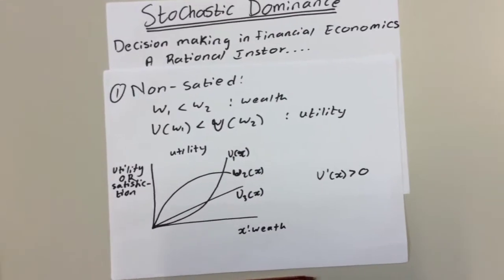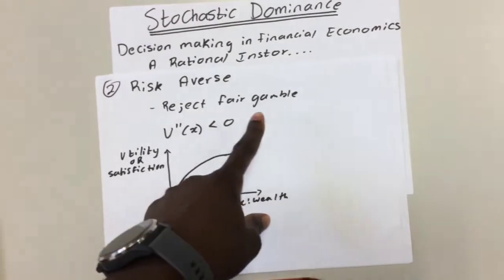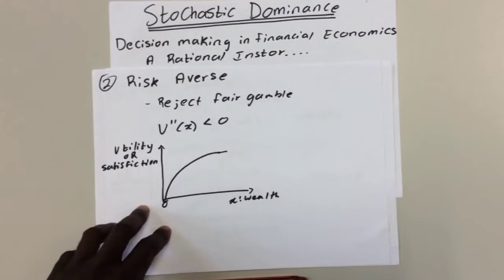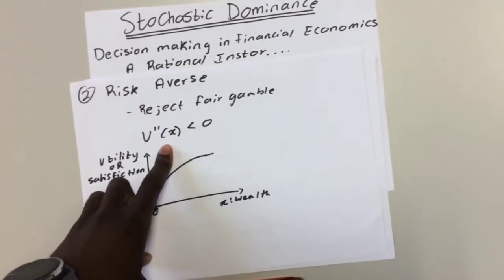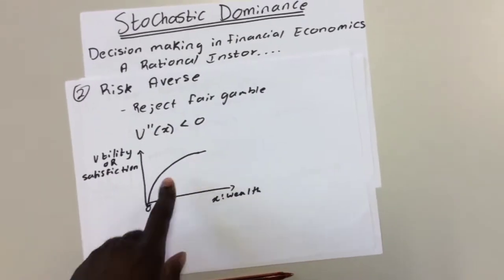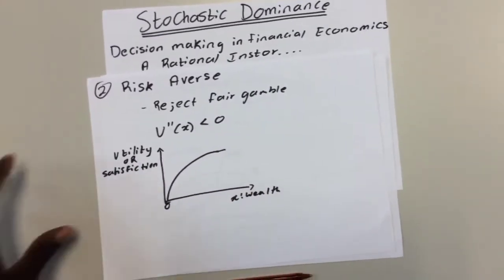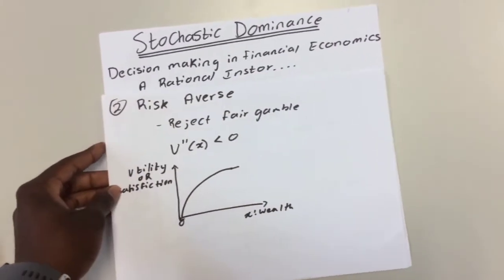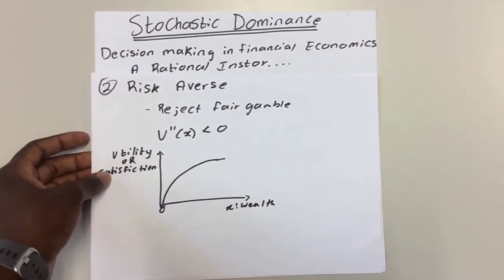Secondly, we assume that a rational investor is risk averse, meaning that every additional increment of return is less valuable than the last increment. As you can see on the function, the utility function has to bend away from the x-axis. You will still be happy, but every increment of gain is less valuable than the previous increment. As this function shows, the more the wealth increases, the utility function does not increase by the same rate.